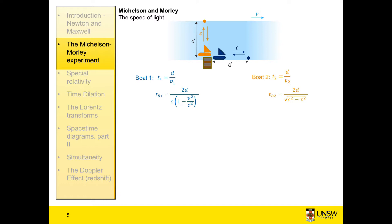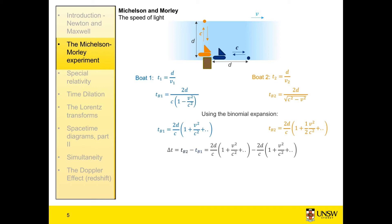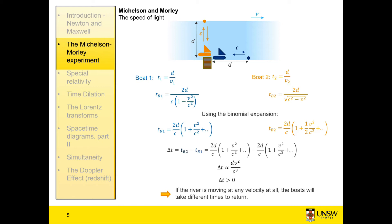We're interested in finding the difference between the two times. These are fairly complex expressions, so we can use the binomial expansion. Time for boat one expands as one form and boat two as another. Taking the difference, we find that the time difference ΔT is approximately equal to d × v²/c³. We can see from this expression that the difference in time between the two boats is always positive — so if the river is moving at any velocity at all, the boats will always take different times to return, giving us a positive, non-zero ΔT.